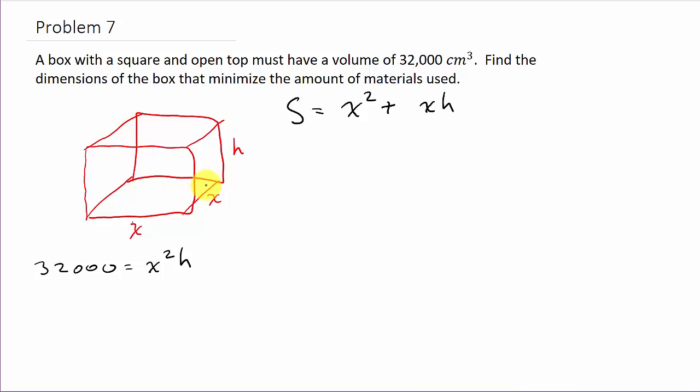That area is X times H, so I've got two of them. The front - this is X, this is H, so this area is X times H. The back is the same. That's X back there and this is H. Actually, I've got four of them, so that's going to be 4XH.